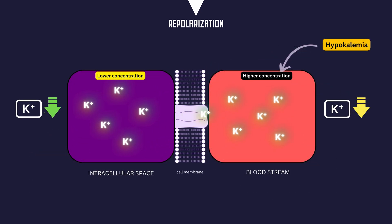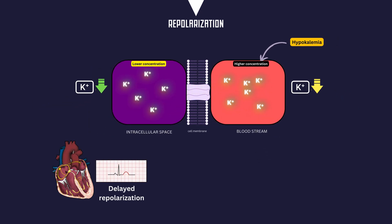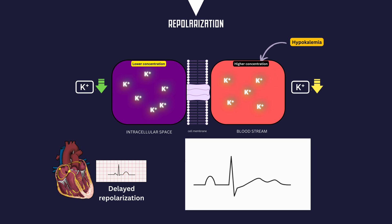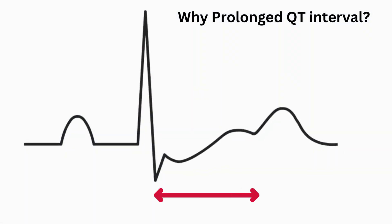Moving on — what if there is hypokalemia? In hypokalemia, there's a shortage of potassium ions available for cellular function. This leads to delayed or impaired repolarization of cardiac cells. On the ECG, hypokalemia typically shows flattened or inverted T-waves. The reduced availability of potassium ions slows down the repolarization process, resulting in changes in T-wave morphology. Additionally, hypokalemia may also lead to other ECG changes, such as prolongation of the QT interval and the appearance of U-waves.